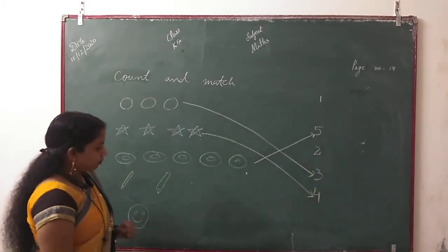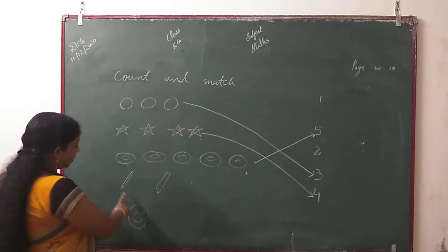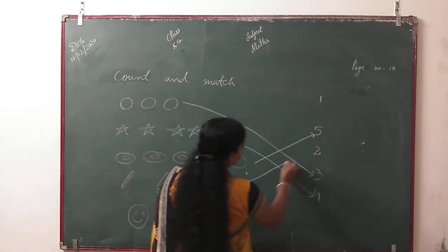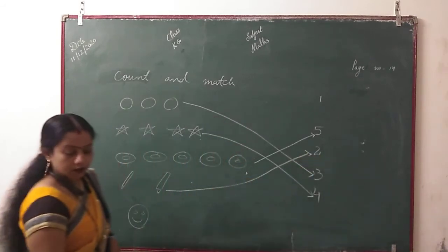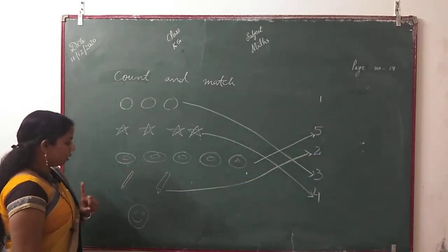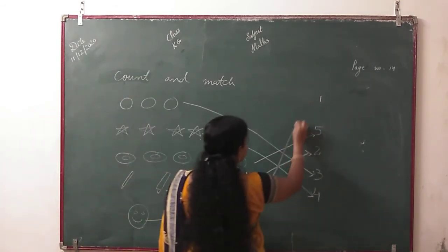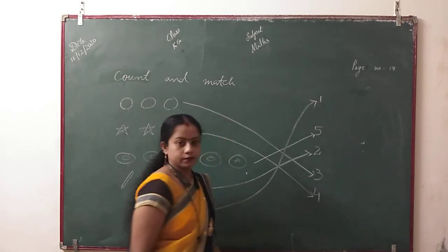Next, you have made a ring. How many? 1, 2. Match it. There is two. Last one, only one. I have made a smiley face. Match it. One. Okay.